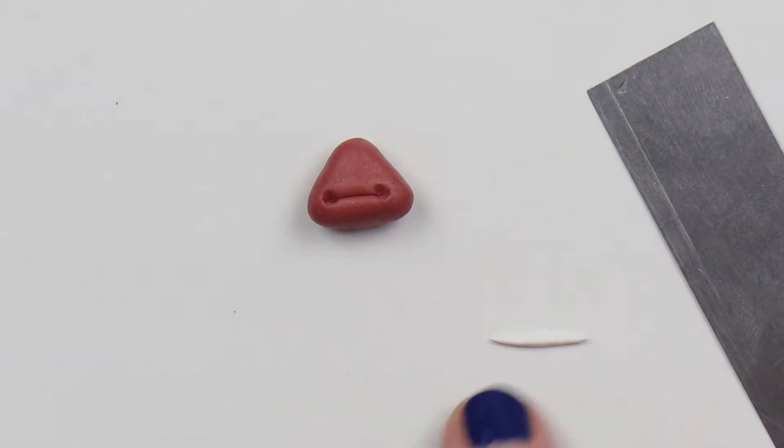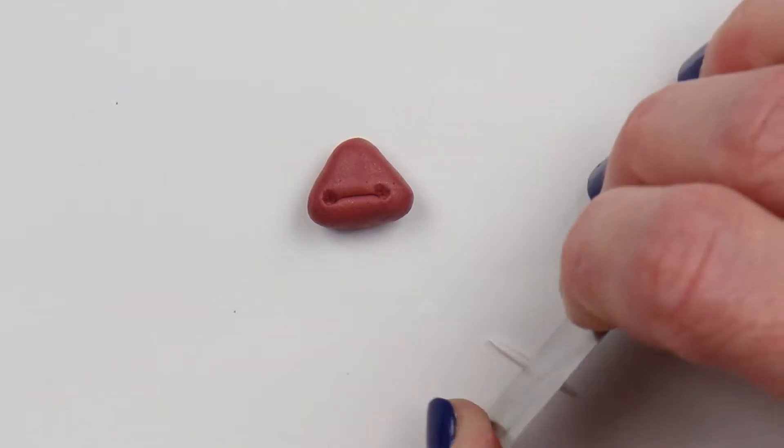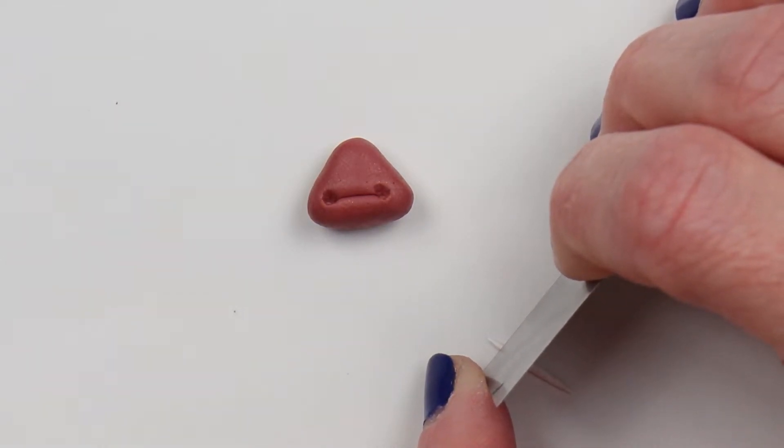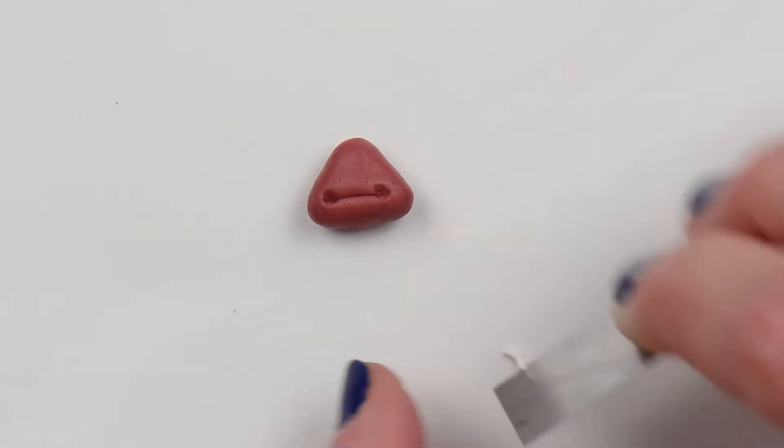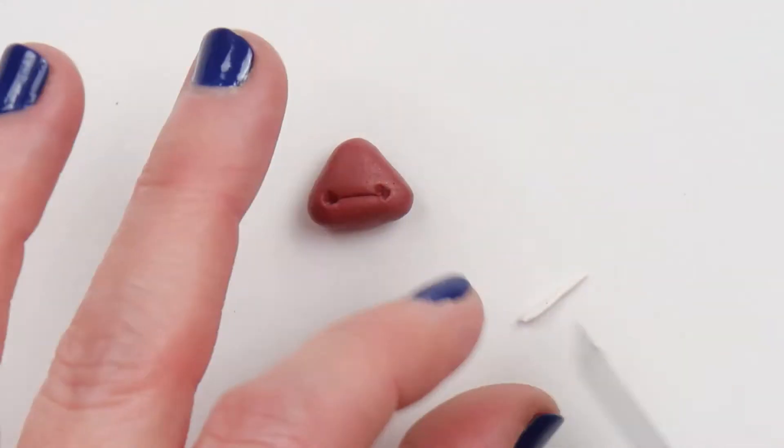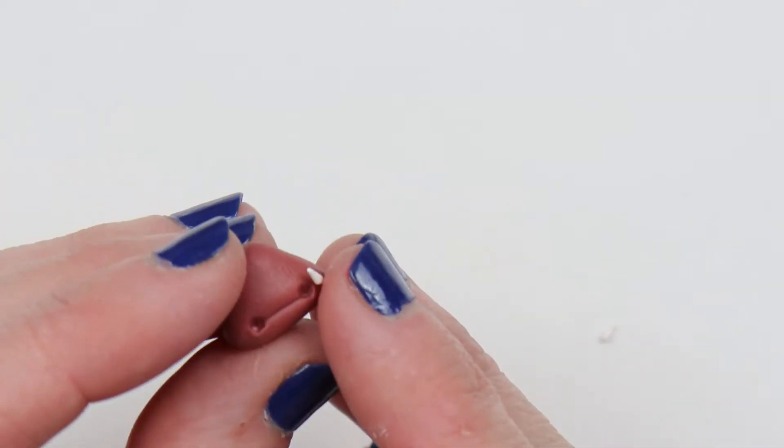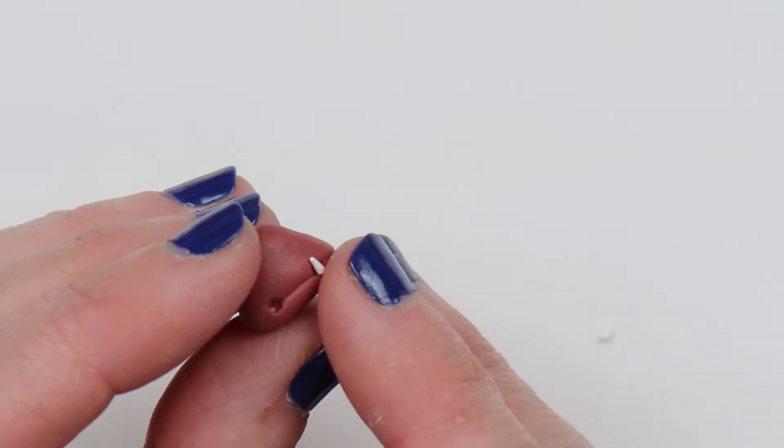Roll out some white clay until it is very thin. Make each end come to a point. And then cut off each end in equal length pieces. Place one on each corner of the mouth, in the pockets that were made.